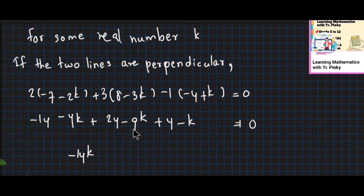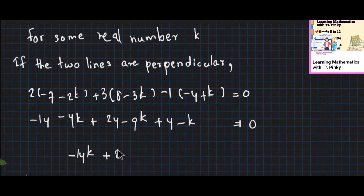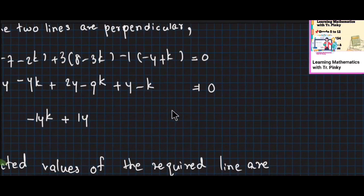14 is equal to 28. 28 minus 4 plus 14. This is the same — the same is equal to 0.